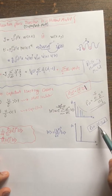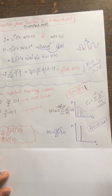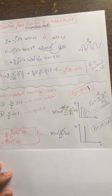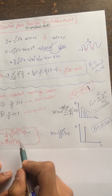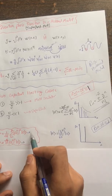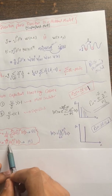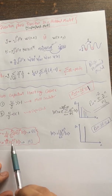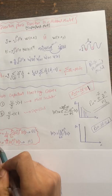In the Mott insulator phase, you have a dramatic increase in phase fluctuation and a decrease in number fluctuation. You can write down the wave function for the superfluid-to-Mott-insulator transition: for the BEC (superfluid) it is a sum over sites, and for the Mott insulator it is a product over sites — both involving the field creation operators acting on the vacuum state.